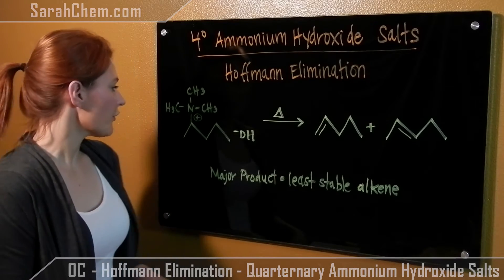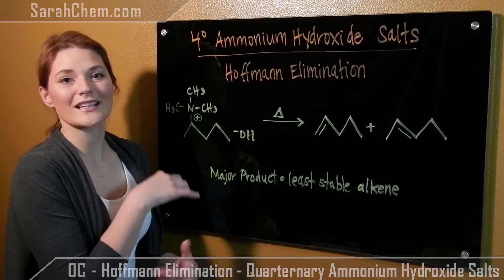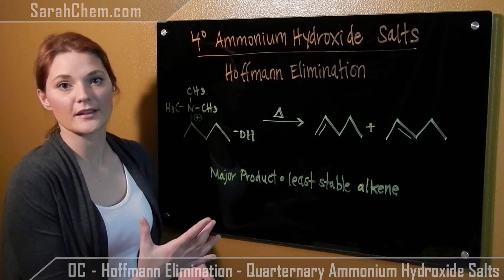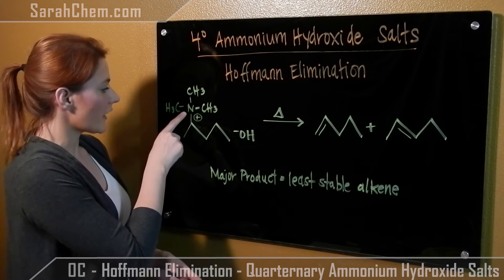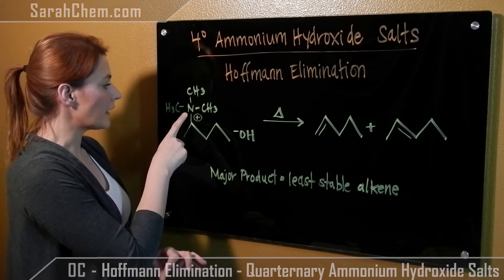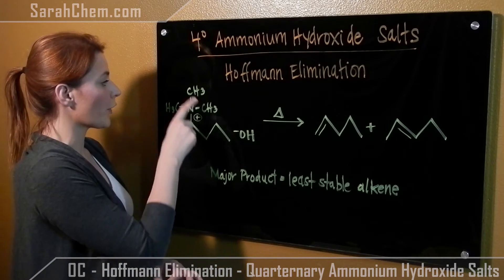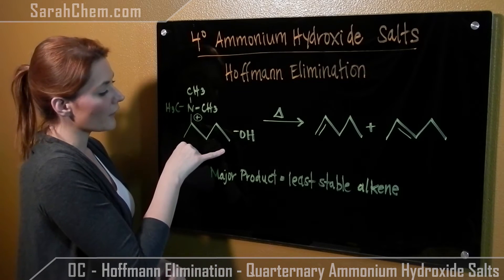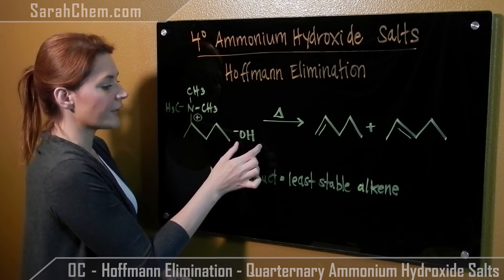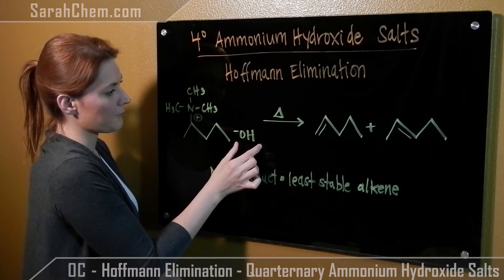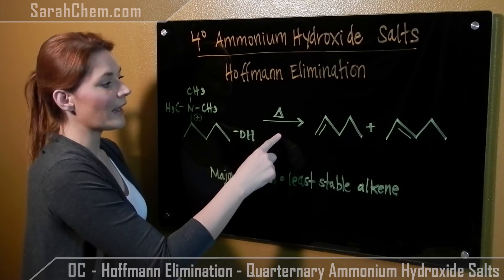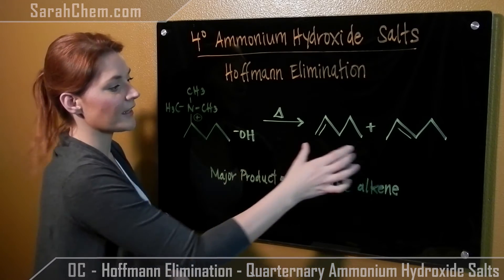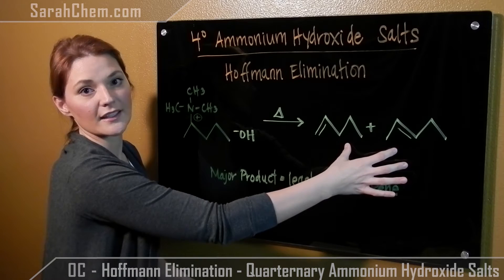The first thing you have to be able to do is identify what a quaternary ammonium is. It's a nitrogen that's directly attached to four carbon groups. This is our quaternary ammonium, and here's the hydroxide. If you apply heat to the system, you will get alkenes out.